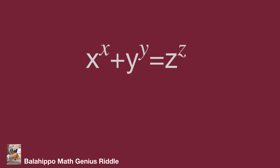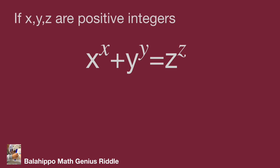The given equation is x^x + y^y = z^z. To prove there is no positive integer solutions for x, y, and z, I'm going to set a statement: if x, y, and z are positive integers, what will happen to the given equation x^x + y^y = z^z?